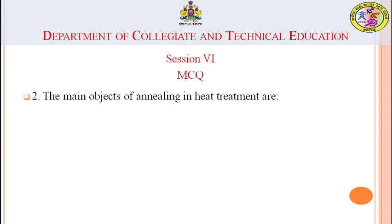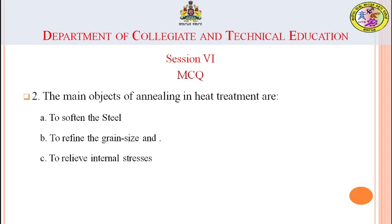Question 2: The main objects of annealing in heat treatment are: (a) to soften the steel, (b) to refine the grain size, (c) to relieve the internal stresses, (d) all of the above. The answer is all of the above.